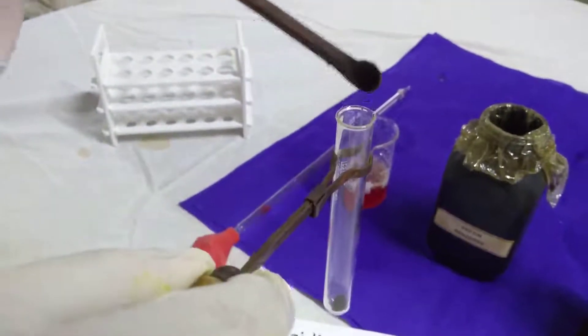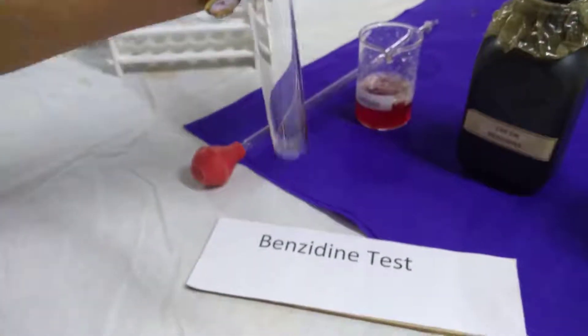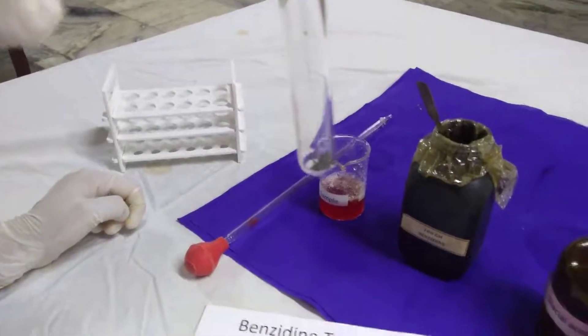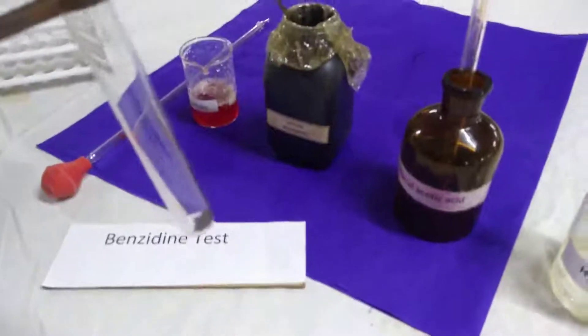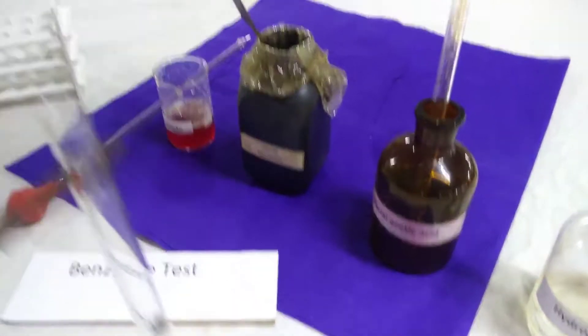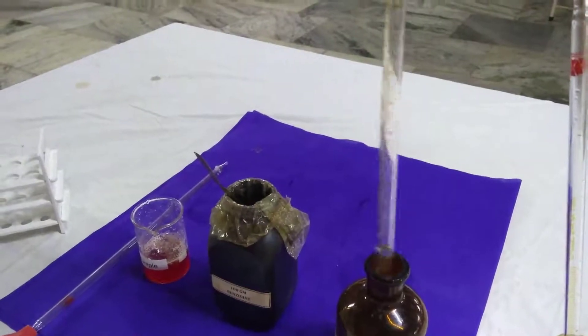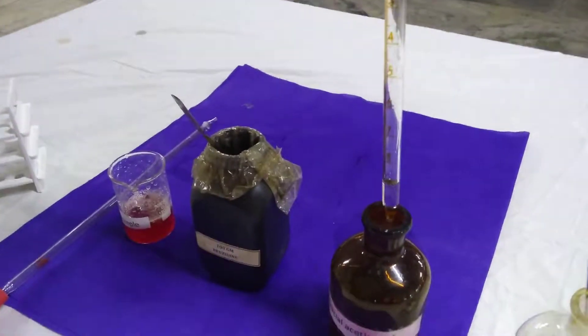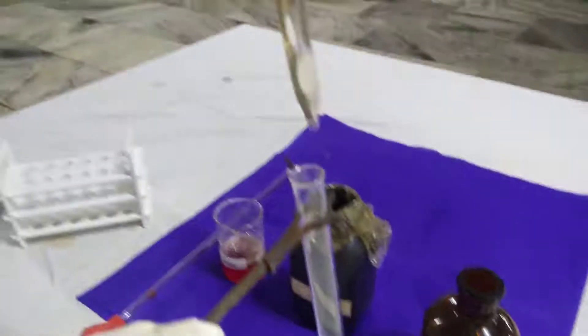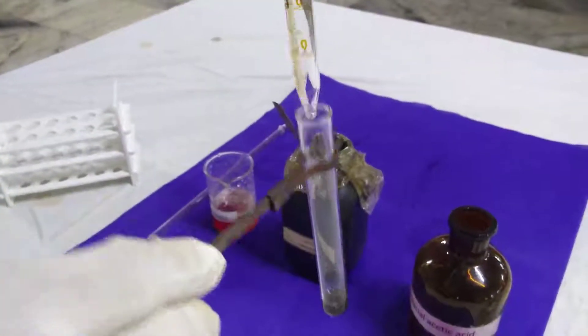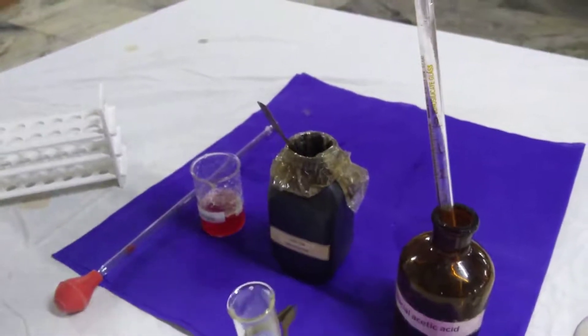To this, add 1 ml of glacial acetic acid. Then add 1 ml of hydrogen peroxide to the test tube.